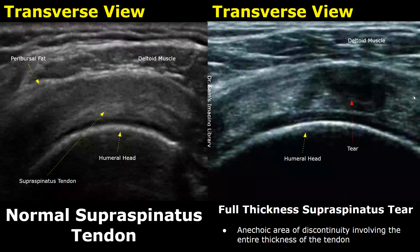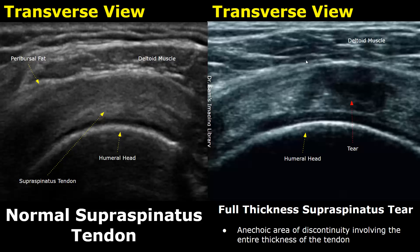Here is another image of a full thickness tear. We can see a large anechoic area extending from the bursal side of the tendon all the way to the articular side. The upper side is the bursal side because it is next to the subacromial bursa, and the side near the humeral head is the articular side.